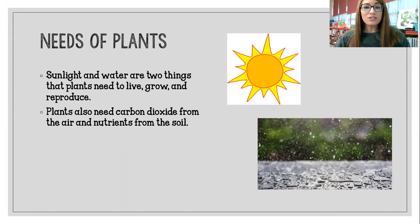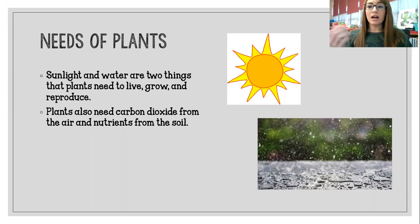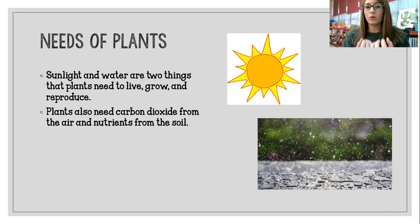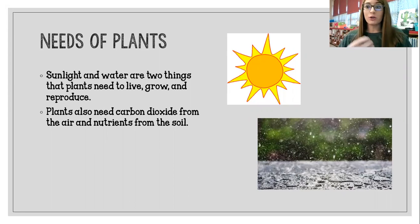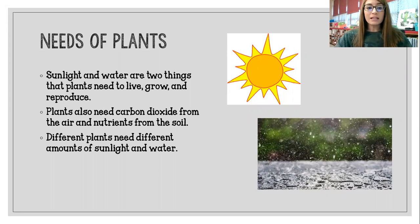Plants also need carbon dioxide from the air and nutrients from the soil. So it's not just sun and water — it's got to have carbon dioxide and it's got to take in nutrients from the ground. You've got to make sure that you're planting the right things in the right places geographically so that they can grow to the best of their capability. Different plants need different amounts of sunlight and water.